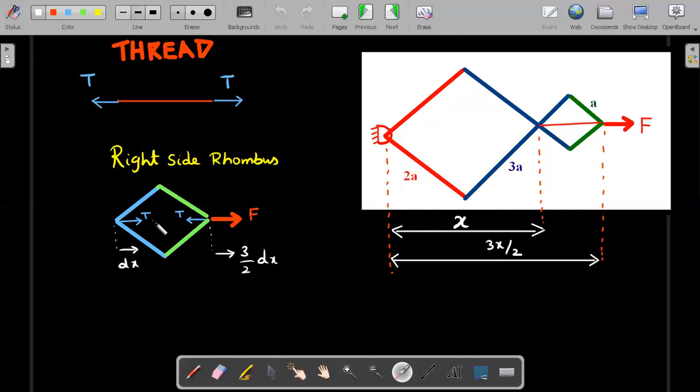This is the basic gist of a virtual work method, which you could use in many of the pulley block problems also in constraint relations. So this is slightly different because we are not having any pulley block system here.